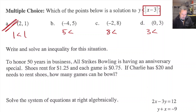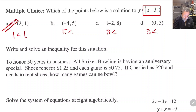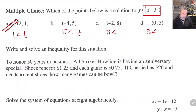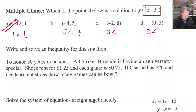For B, if I put negative 4 in, that becomes negative 4 minus 3, which is negative 7. The absolute value of negative 7 is 7. So when I plug 5 in for y, 5 is less than 7 — that's true. So B works.